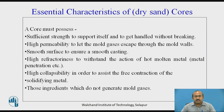Let us go with the essential characteristics of a dry sand core. The core must possess sufficient strength to support itself and to be handled without breaking. High permeability to let the mold gases escape through the mold walls. Smooth surface to ensure a smooth casting. High refractoriness to withstand the action of hot molten metal. High collapsibility in order to assist the free contraction of solidifying metal. And those ingredients which do not generate mold gases.